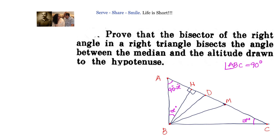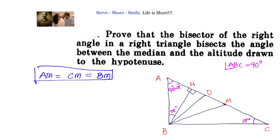In a right triangle, the midpoint of the hypotenuse is equidistant from all three vertices. That means M is the circumcenter of the triangle, which means AM equals CM equals BM. This is because ABC is a right triangle and the midpoint of the hypotenuse is the circumcenter.